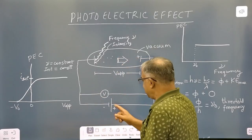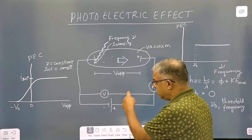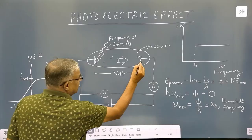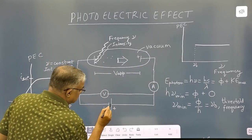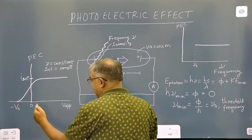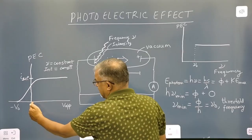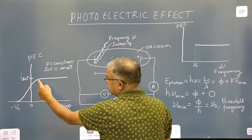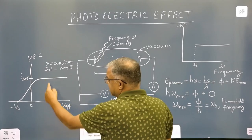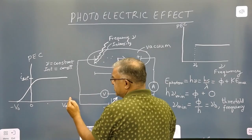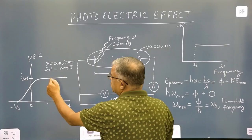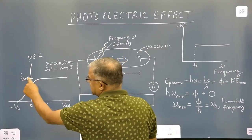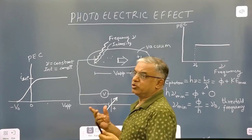There was a facility to change the applied voltage — the potential difference between the two electrodes. When the applied voltage is increased from zero to higher values, the photoelectric current keeps increasing. But beyond a certain applied voltage, whether you increase the voltage or not, there is no change in the photoelectric current. The photoelectric current becomes maximum, and this maximum photoelectric current is called the saturation photoelectric current.